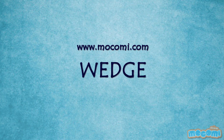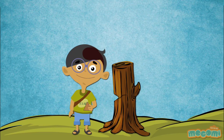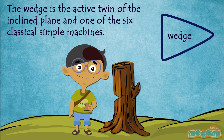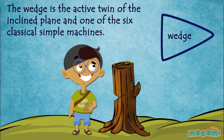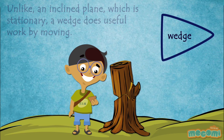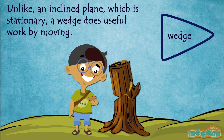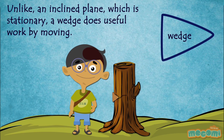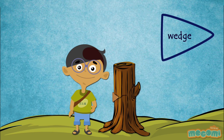What is a wedge? The wedge is the active twin of the inclined plane and one of the six classical simple machines. Unlike an inclined plane which is stationary, a wedge does useful work by moving.